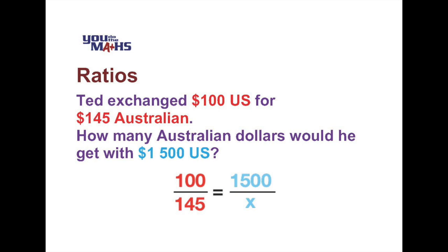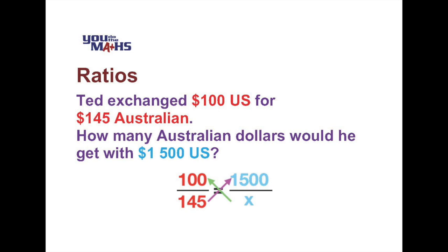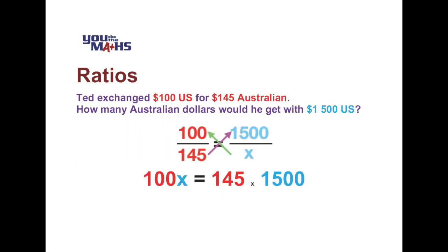To solve a problem where we have one fraction equal to another fraction involving an unknown, we can use a process called cross multiplication. We take both denominators and multiply them by the numerators on the opposite side. As shown by the arrows, we multiply X by 100 on the left-hand side, and we multiply 145 by 1,500 on the right-hand side. This gives us 100X on the left and 145 multiplied by 1,500 on the right.